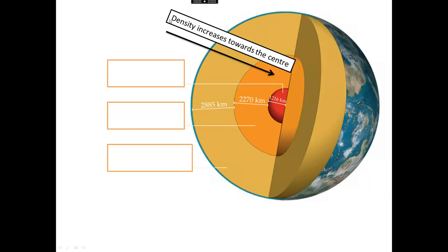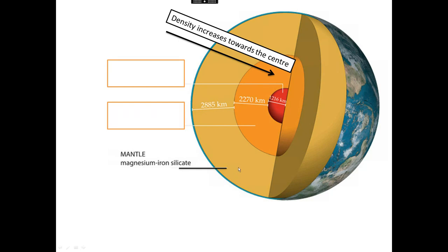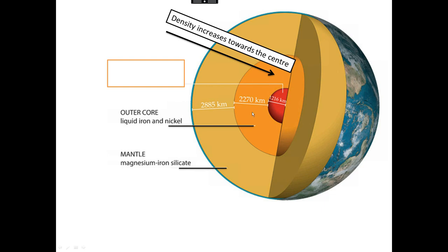Density increases towards the centre of the earth, and we also think the temperature increases towards the centre. Just below the earth's crust is the mantle — made of hot molten rock called magma. Then the earth has a core that seems to be in two layers: the outer core is liquid iron and nickel, and the inner core is solid iron and nickel.